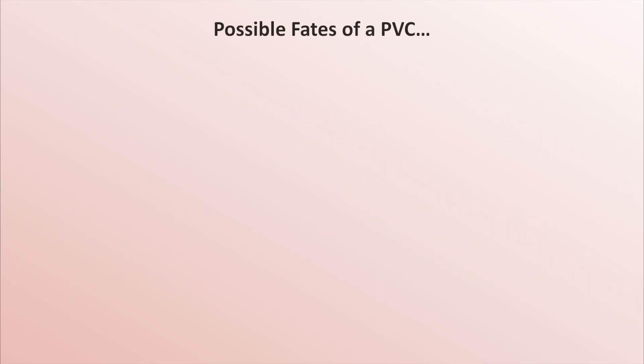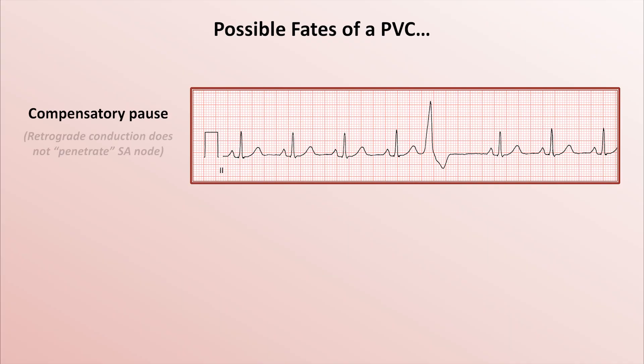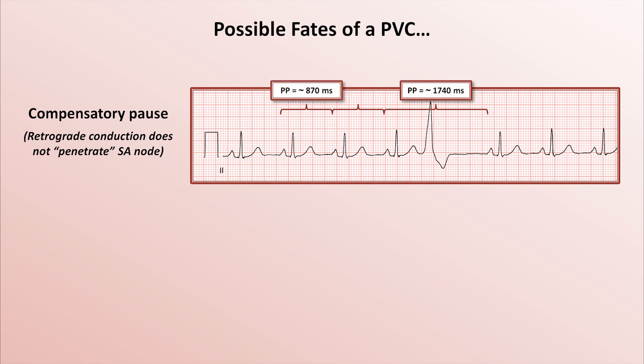PVCs also have several possible fates. For example, PVCs can be followed by what is known as a compensatory pause, in which retrograde conduction from the ventricles does not extend all the way back to the sinus node. Instead, the sinus node just keeps beating at the same frequency irrespective of the PVC. This results in a pause after the PVC, in which the P-to-P interval that surrounds the PVC, as measured on EKG, is twice the normal P-to-P interval. This is by far the most common fate of PVCs.